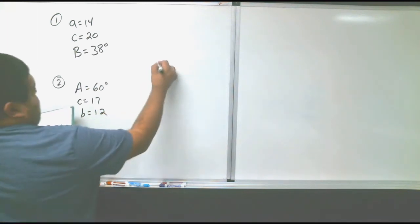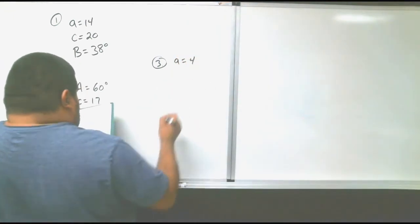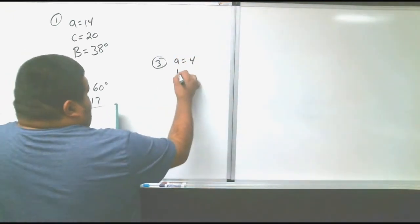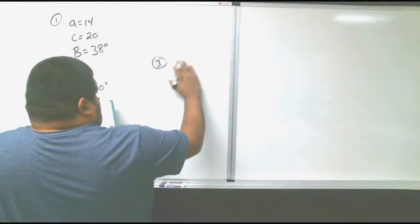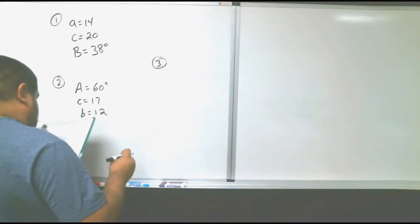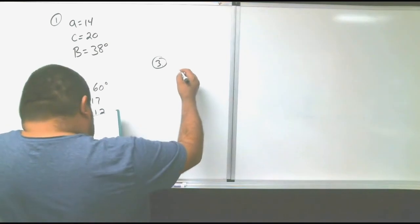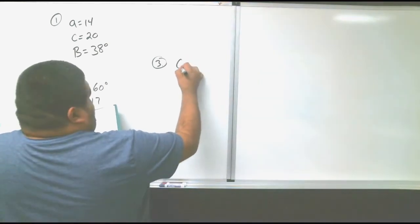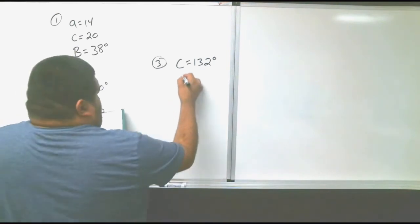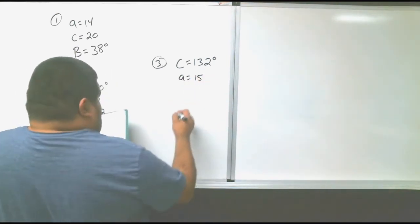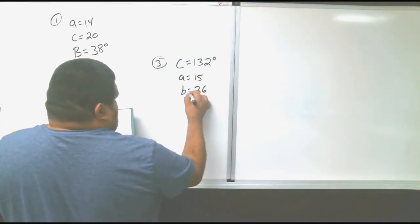And then for the last one, little a is 4, little b is 6. Let's change that one because that one gives you three sides, you have to find the angles. I use b. All right. C equals 132 degrees, a is 15, and b is 26.